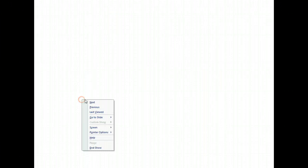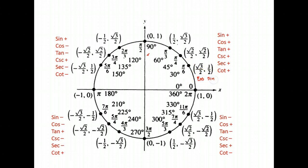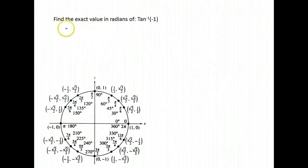We're going to be using exact values, so you can use the unit circle chart or the table, whichever is most comfortable for you. Remember that x is your cosine and y is your sine. Tangent is sine divided by cosine. You can also use the chart in table format.